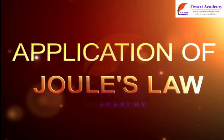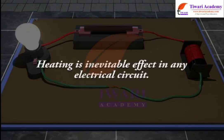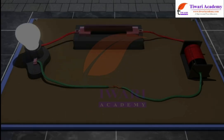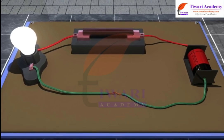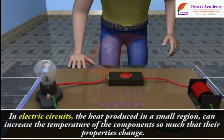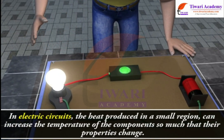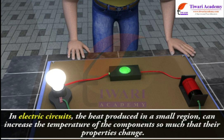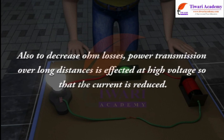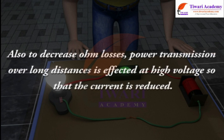The application of Joule's law. Heating is an inevitable effect in any electrical circuit. Often this is an undesirable effect. For example, in electric circuits the heat produced in a small region can increase the temperature of the components so much that their properties change. Also, to decrease ohmic losses, power transmission over long distances is carried out at high voltage so that the current is reduced.